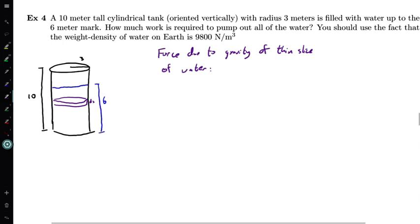So force due to gravity of the thin slice of water. Well, we're told that the weight density of water on Earth is 9,800 newtons per cubic meter. So if I find out the volume of this slice, then I can multiply that by 9,800 in order to give me the weight. So first goal is to find the volume of the slice. And in finding out the volume of this slice, well, I know this is a cylinder. It has height dx, and it has the surface area of the base of this cylinder is going to be pi times the radius squared. Well, the radius of this cylinder is always 3. So the volume of this slice is going to be pi times 3 squared dx, i.e. 9 pi dx.